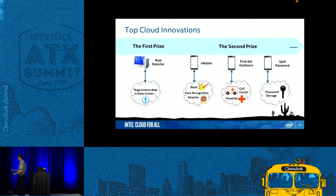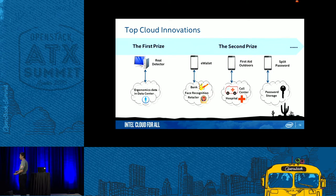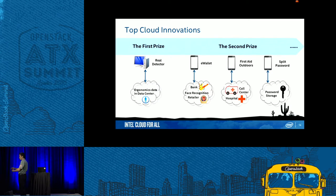For the second prize there were three winners. The first is an e-wallet that treats a smartphone as a credit card. The smartphone camera uses face recognition as a password, and the cloud connects the bank and retail — so if you want to pay at a retail store you just use your smartphone without carrying cash. It's a very creative idea.